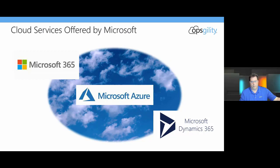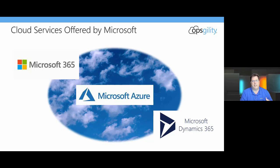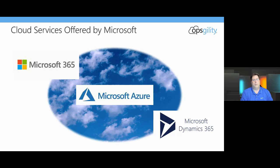For those of you not familiar with Microsoft and the Microsoft cloud ecosystem, there are really three tiers of services that Microsoft provides within the cloud. There's Microsoft Azure, which provides infrastructure and platform as a service type services. Then there are two software as a service based products: Dynamics 365, which also ties into Power Platform, and Microsoft 365, which we're talking about today.